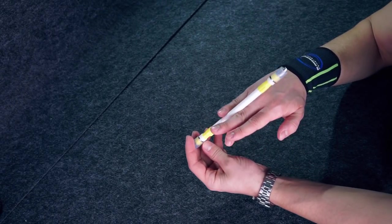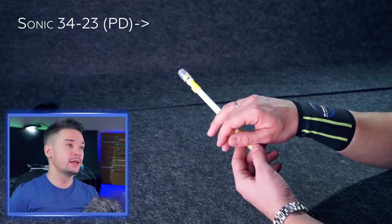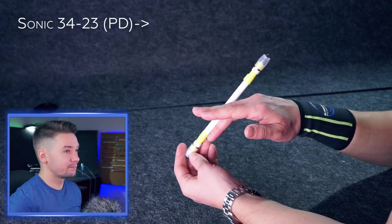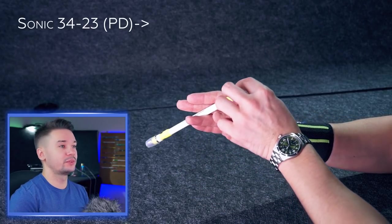So you start with Sonic 3 4 2 3 palm down with a bigger part of your mod at the outer side of your hand. As it goes to 2 3 turn your hand and move thumb closer.